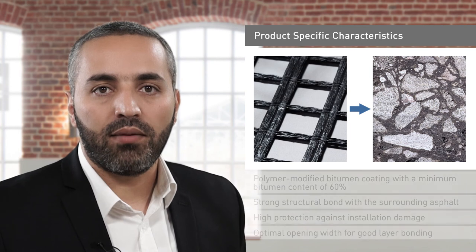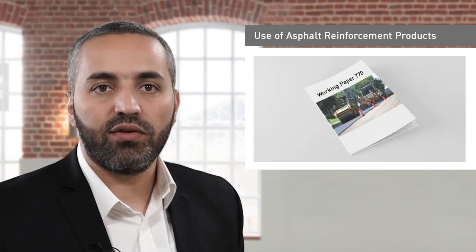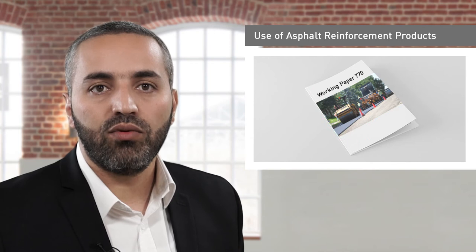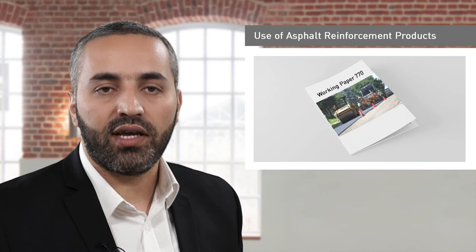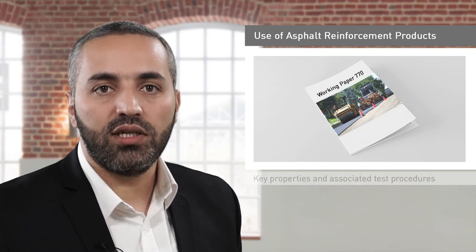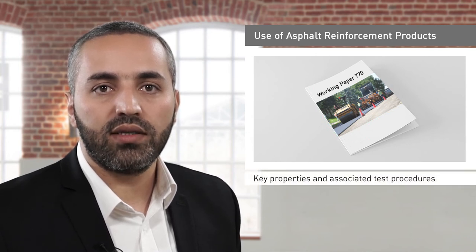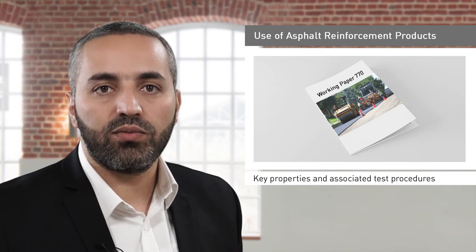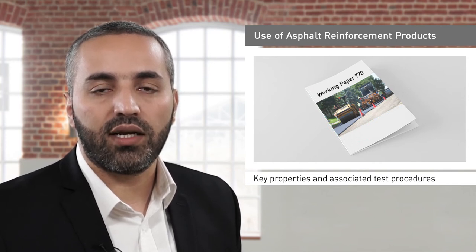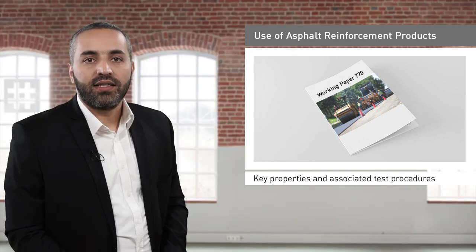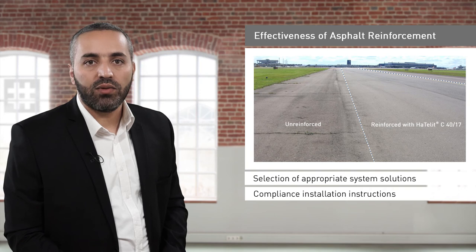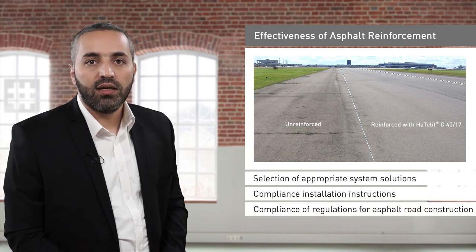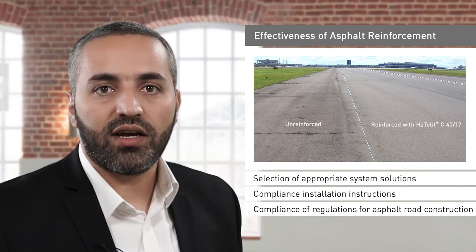The working paper 770 on the use of nonwovens, grids and composites in asphalt road construction, issued by the German Road and Transportation Research Association (FGSV), summarises the key properties and associated test procedures for the use of asphalt reinforcement products in pavements. Selection of the appropriate system solution and compliance with the installation regulations and guidelines for asphalt road construction are crucial in ensuring the proper performance of asphalt reinforcement.